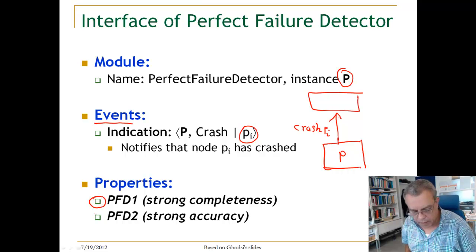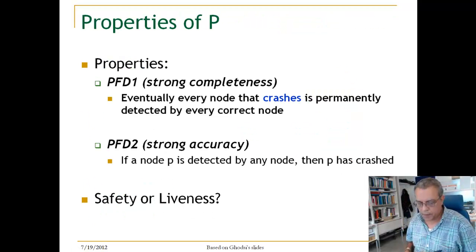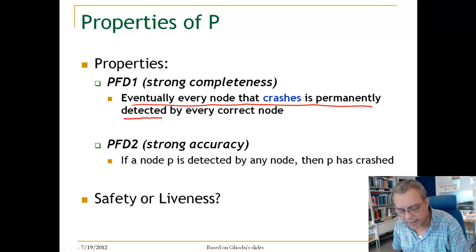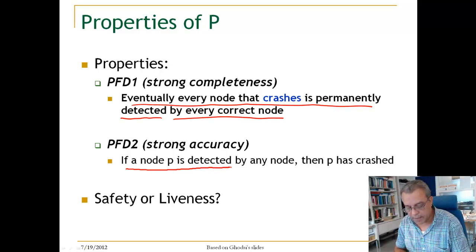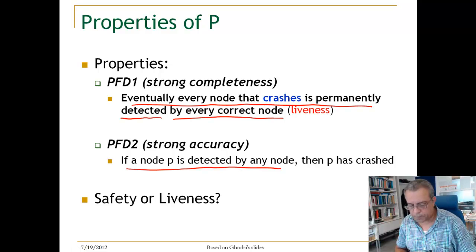Strong completeness means: if a node has failed, it will be detected. Strong accuracy means: if a node is detected, then it has crashed. To restate: strong completeness — eventually every node that crashes is permanently detected by every correct node. Strong accuracy — if P is detected by any node, then P has crashed.